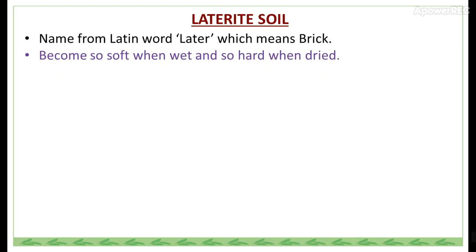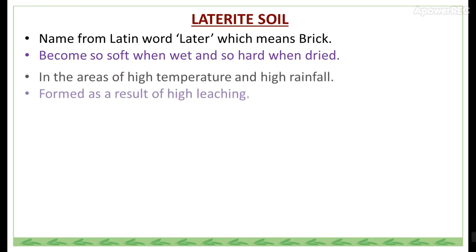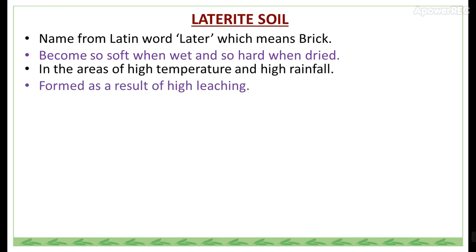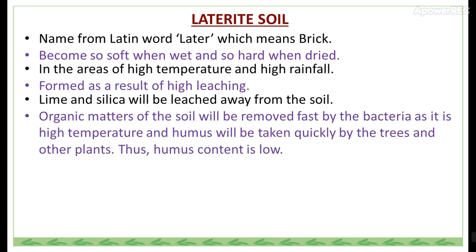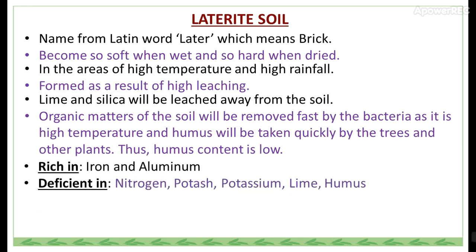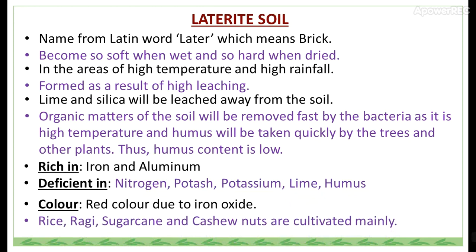Laterite soil is named from the Latin word 'later' meaning brick. It becomes soft when wet and very hard when dried. It is found in areas of high temperature and high rainfall, and formed as a result of high leaching. Lime and silica are leached away from this soil. Organic matter is removed quickly by bacteria due to high temperature, so humus content is low. It is rich in iron and aluminium, but deficient in nitrogen, potassium, lime and humus. The color is red due to iron oxide. Crops cultivated include rice, ragi, sugarcane and cashew nut.